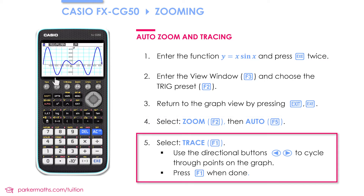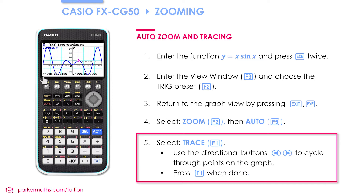Next up I'd like to look at the trace function, which I get to using F1. The trace function allows me to find x and y values on the curve. By pressing F1 a crosshair appears on the curve, and I can use the left and right arrows to cycle through points on the curve, which are displayed at the bottom of the screen. One limitation of trace is that it doesn't let you choose the x values — you just have to go with the ones it lets you see. Later in the gsolve tutorial I'll show you how you can actually choose x or y values and let the calculator figure out the other value for you.